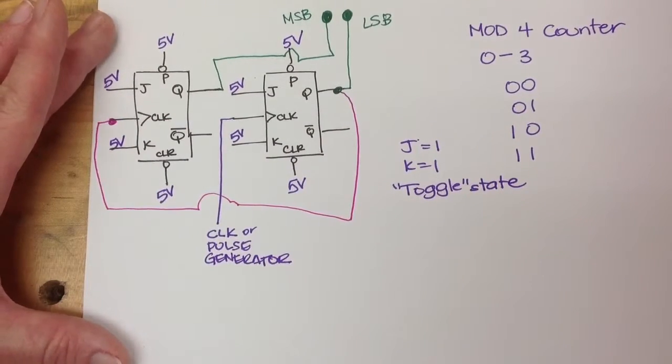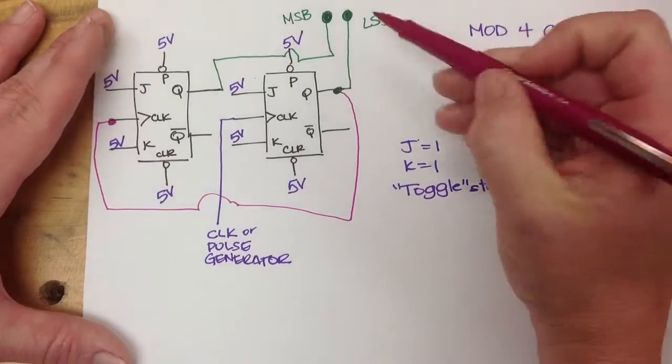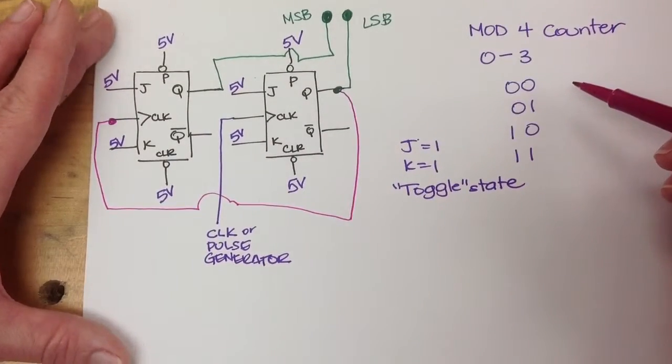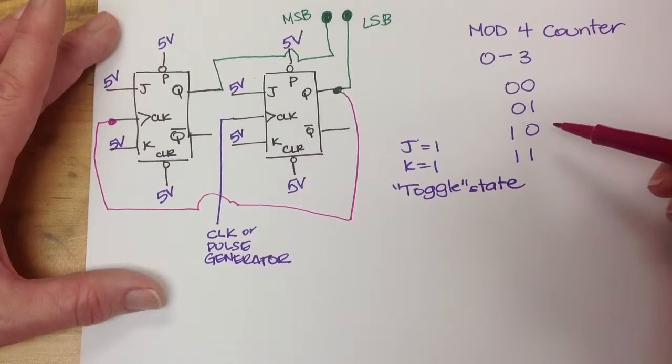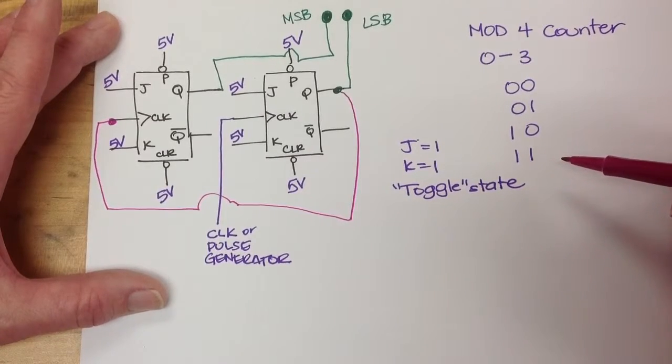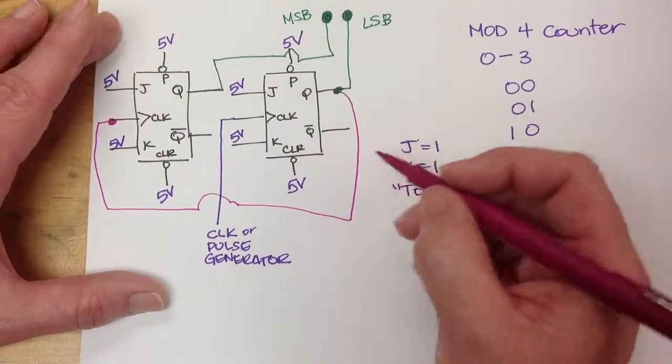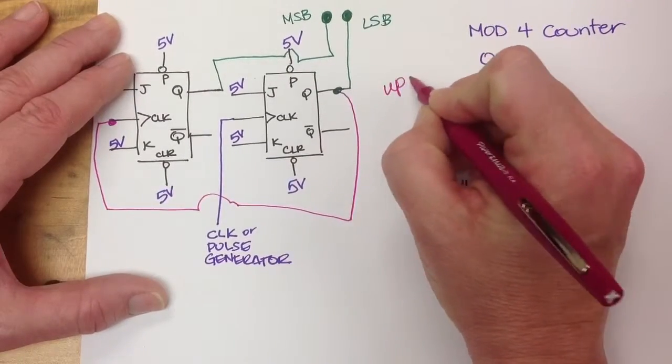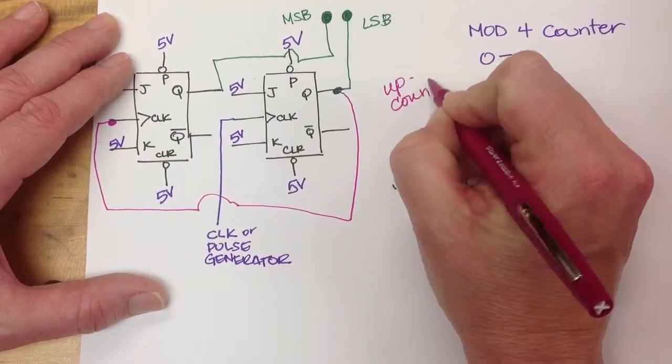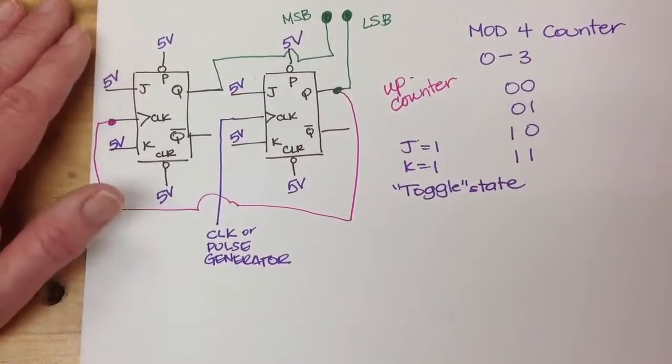So you would have the case where these were both off, and it would be 0, then it would be 1, then it would be 2, then it would be 3. So this would be a 0 to 3 up counter from JK flip-flops.